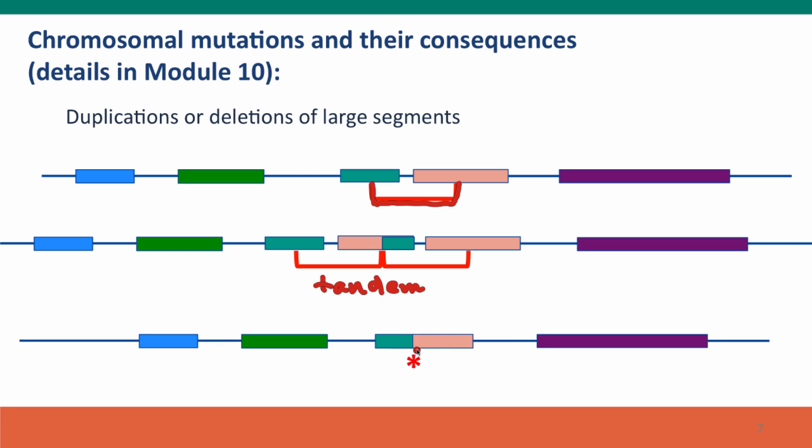Here's a drawing of a deletion where the same segment, instead of being duplicated, has been deleted. And again, we've got a hybrid protein, but that costs us our functional copies of both the green and the pink proteins.